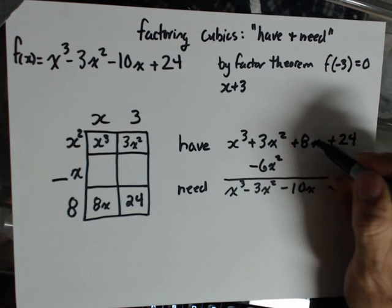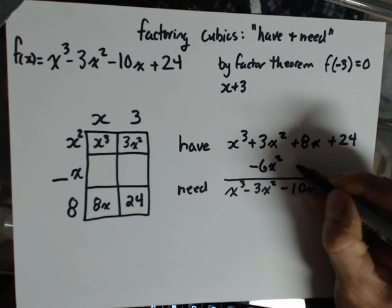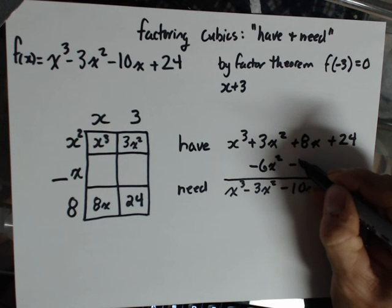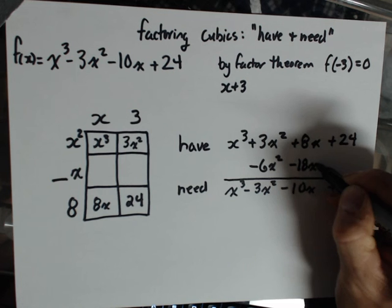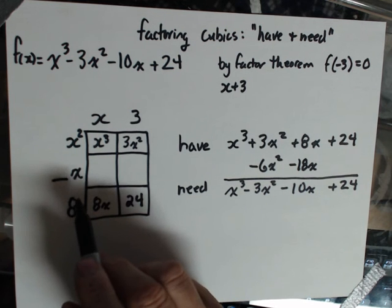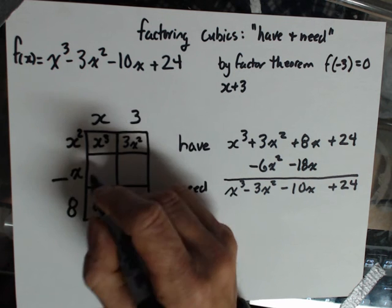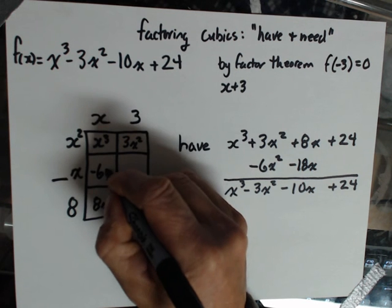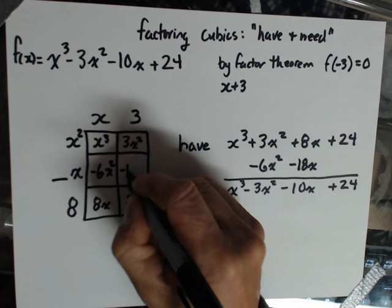I have an 8x, I need a negative 10x. So I know that I have to get a negative 18x there. So basically in here is a negative 6x squared and in here is a negative 18x.